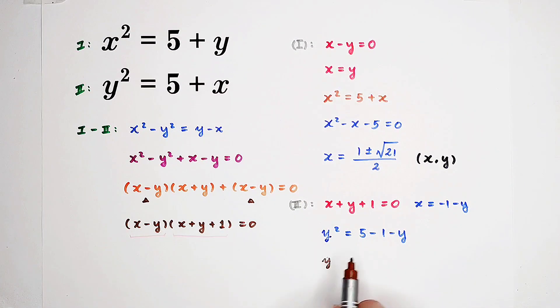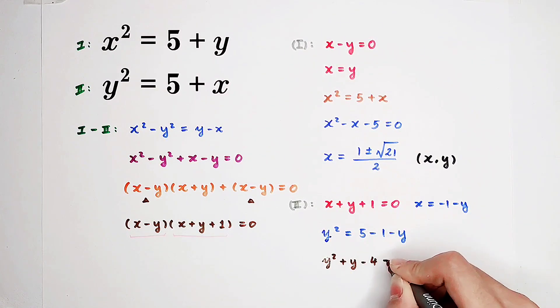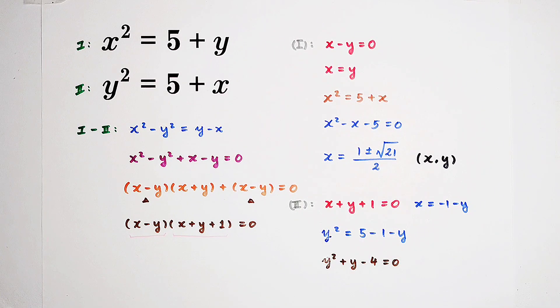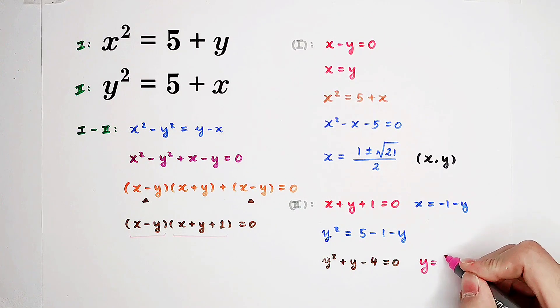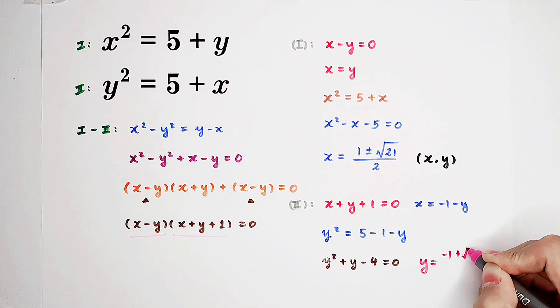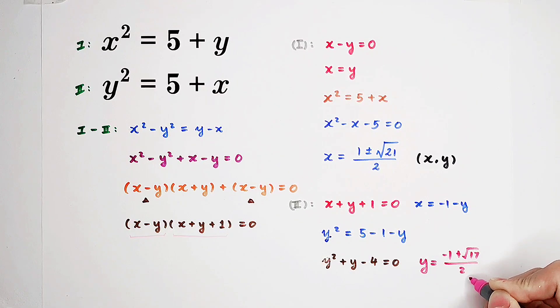Substitute this into our original equation: y squared equals 5 minus 1 minus y. So y squared plus y minus 4 equals 0. Again, a quadratic equation about y. y is equal to negative 1 plus square root of 17 over 2, or negative 1 minus square root of 17 over 2. For the first one, x is just minus 1 minus this guy. For the second one, it's minus 1 minus this guy.